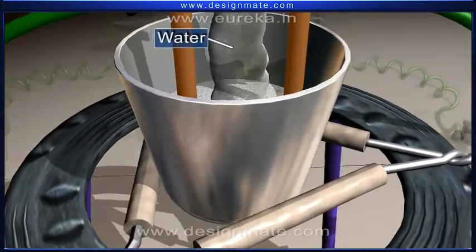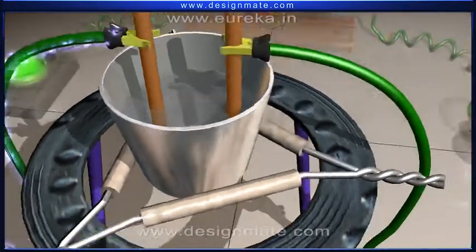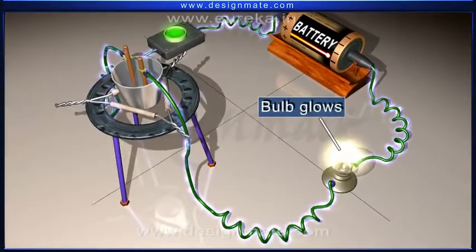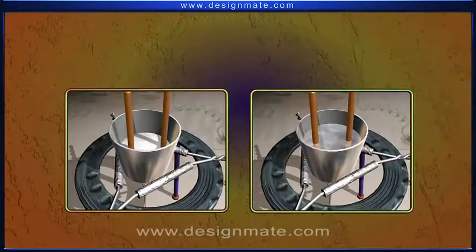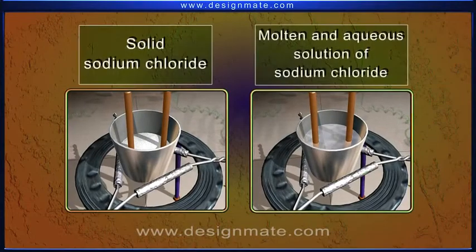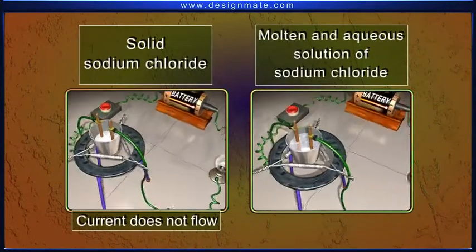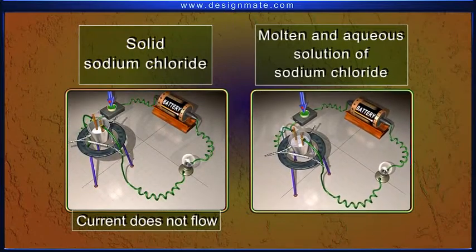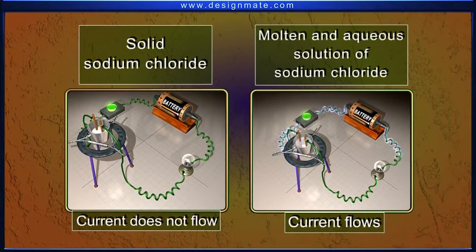Pour some water in a crucible. Notice that the bulb glows. This activity shows that the current does not flow through the solid sodium chloride, but it flows through the molten and aqueous solution of sodium chloride.